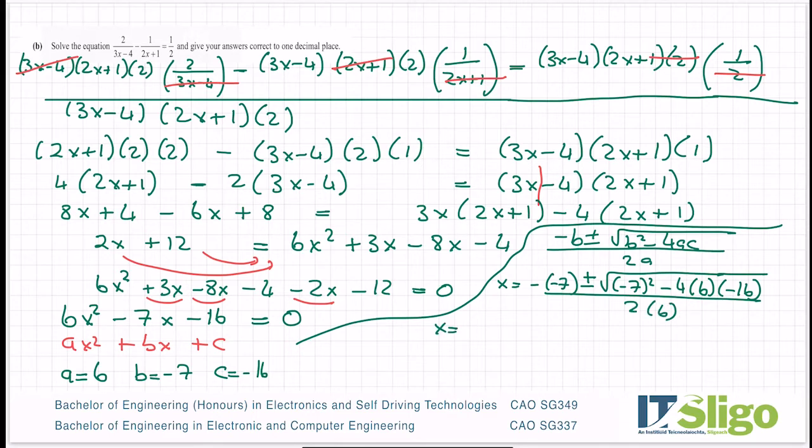So minus minus 7 is 7 plus or minus. Then into my calculator I'm putting everything under that square root. Make sure you put the minus 7 in a bracket, minus 4 by 6 by minus 16. And I'm getting root 433 all over 2 6's or 12. And then you split it into the plus and the minus. So my first answer x is equal to 7 plus root 433 over 12. 7 plus root 433 all over 12 on my calculator. It asked me for one decimal place, so I'm getting 2.317. So to one decimal place that's 2.3.